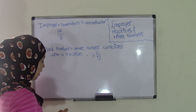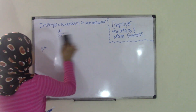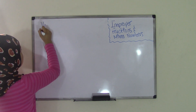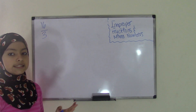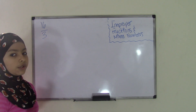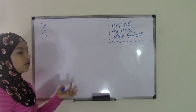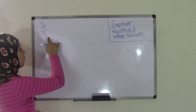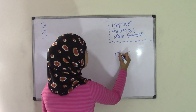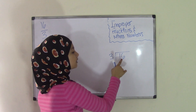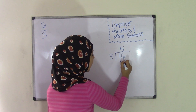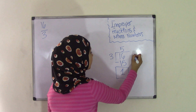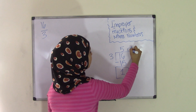Now what if we had an improper fraction such as 16 over 3 and we had to convert this into a mixed number? It's really simple — it's pretty much like simple division. All you have to do is divide the numerator, which is 16, by the denominator, which is 3. So you do 16 divided by 3. You know that 3 goes into 16 five times because 3 times 5 is 15, and your difference is 1.